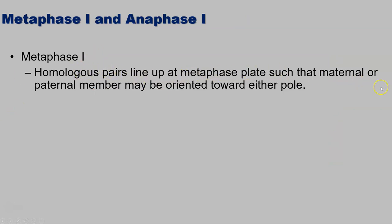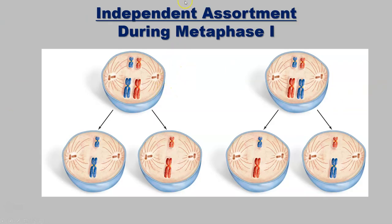In metaphase I, the homologous pairs line up at the metaphase plate. Independent assortment is the other way in which genetic variation can be added — chromosomes may line up in any possible combination at the metaphase plate. Here we saw both blues lined up on the left side, so both ended up in the left daughter cell. But you could have had blue and red on each side, so the daughter cells could end up differently. Either possibility could happen and it is random chance which one occurs. Independent assortment is just the way in which duplicated chromosomes line up at the plate during metaphase — it's random, and which types of genetic material get into which daughter cell is completely random. That adds genetic variance.